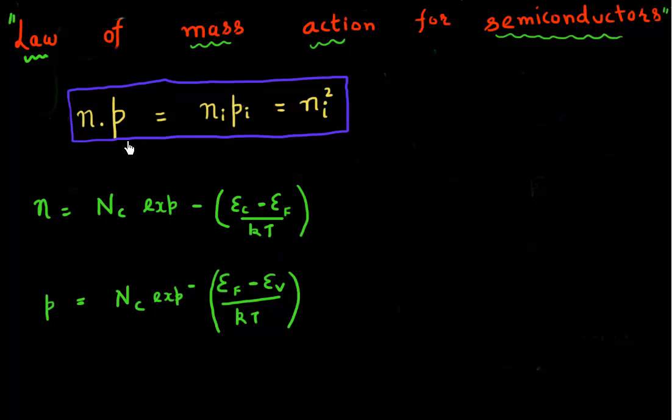So let me use these expressions that are derived for the number of electrons and holes. In one of the previous videos, we derived the expressions for n and p. Now let me just multiply them to check and make sure whether this law is correct or not.